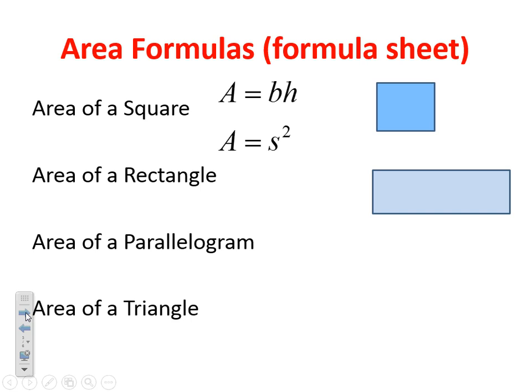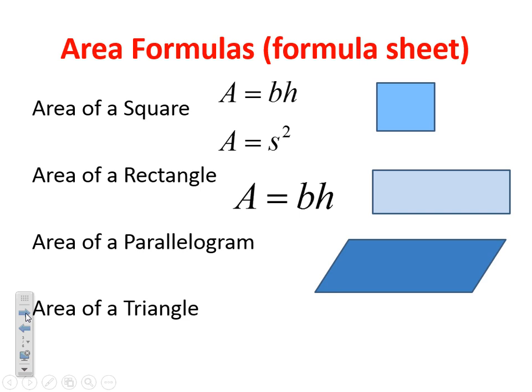Now a rectangle is very similar to a square. All the sides are never going to be the same, but we can use a similar formula. We're just going to use area equals base times height. Now if we talk about area of a parallelogram — if we cut a parallelogram apart and move it to the other side, we just made a rectangle. So if I can cut it apart and make it look like a rectangle, I can use the same formula: area equals base times height.